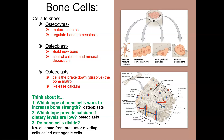Do bone cells divide? No, they don't. All bone cells come from precursor cells called osteogenic cells, and once they've differentiated into osteocytes, osteoblasts, and osteoclasts, they do not divide anymore. But they do live a fairly long time — bone cells live around 25 years.